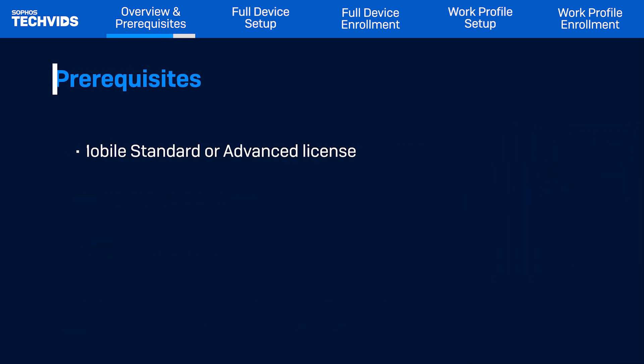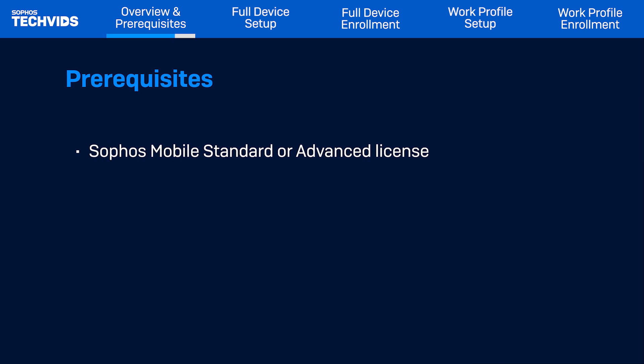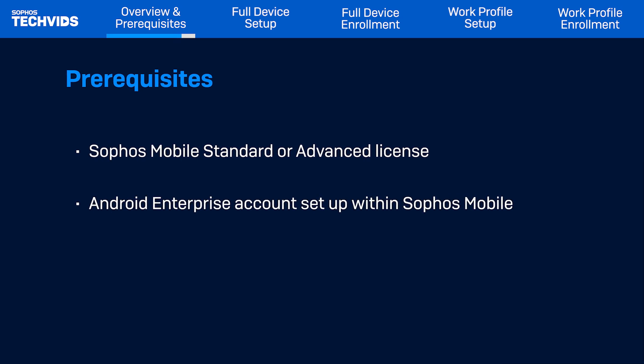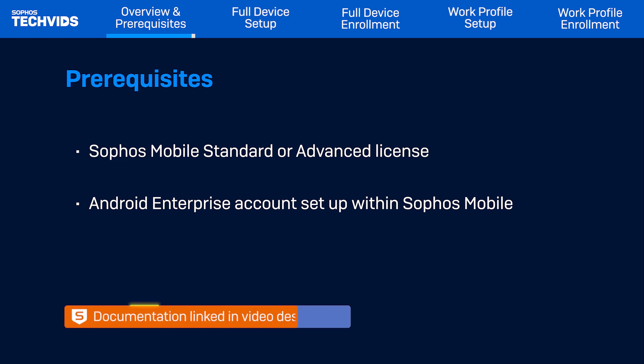You must have a Sophos Mobile standard or advanced license. You will also need the Android Enterprise account to be set up within Sophos Mobile under the Google Setup section. You can find steps to do this in the article linked in the video description.